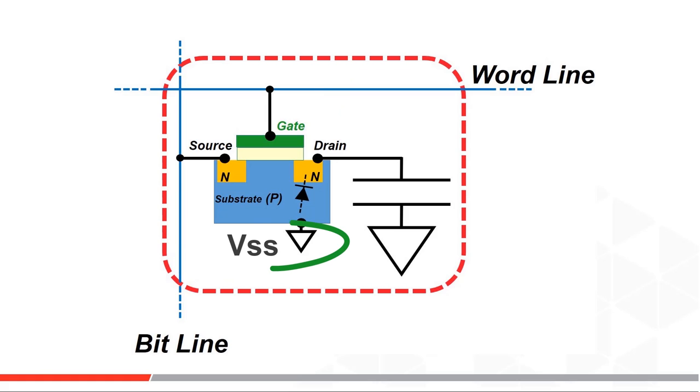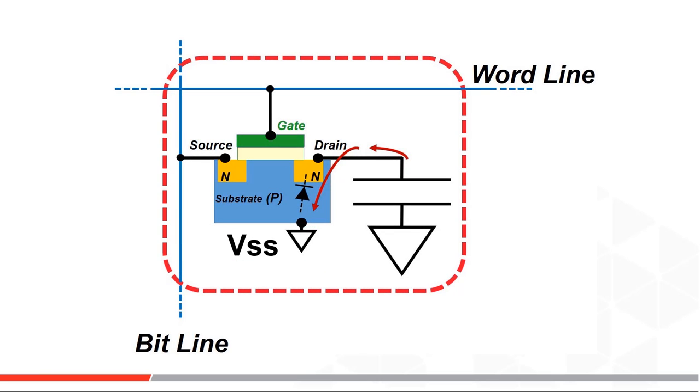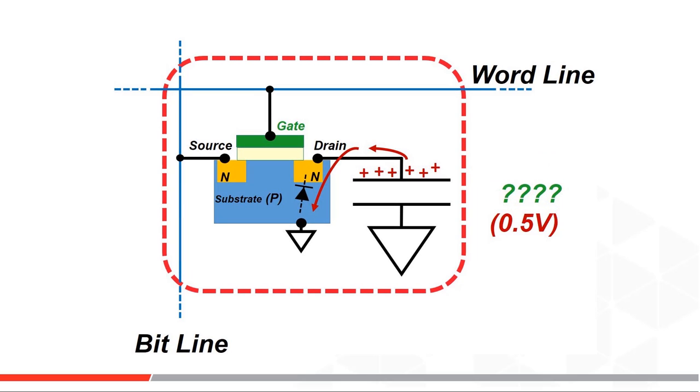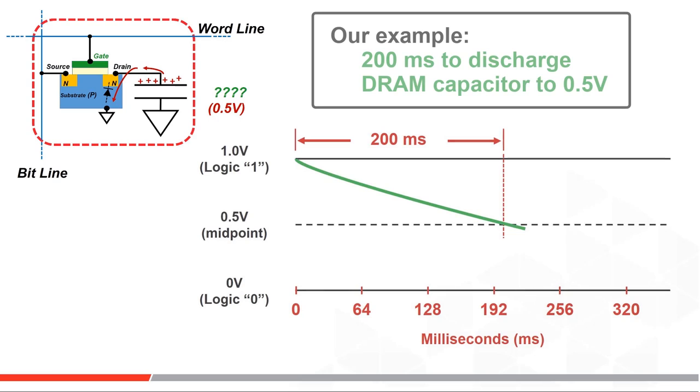Again, we will use VSS or ground in our video, and there's a small leakage path from this gate's drain into the substrate when the gate is off through this reverse diode junction here. The capacitor will discharge after some finite time and fall below the midpoint, 0.5 volts in our example. Let's say that finite time is 200 milliseconds in our case, or one-fifth of a second. So these memory cell capacitors need an occasional recharge to retain their memory value.